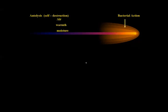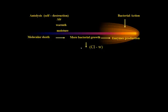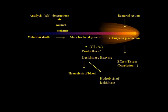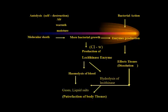Summary of putrefaction: autolysis is self-destruction due to air, warmth, and moisture. Bacterial action is due to Clostridium welchii, which produces lecithinase enzyme causing hemolysis of blood. Lecithinase destroys tissue, causing further spread of bacteria, producing gases, liquids, and salts as putrefaction of the tissues occurs.